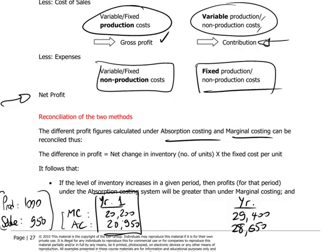Therein lies the answer that explains the difference between these two methods. Sales were less than production — we produced more than we sold — and therefore we created at the end of year one an inventory increase of 50 units. That 50-unit increase in inventory did not include fixed overhead production costs under the marginal costing system, but it did carry some fixed overhead costs under the absorption costing system.